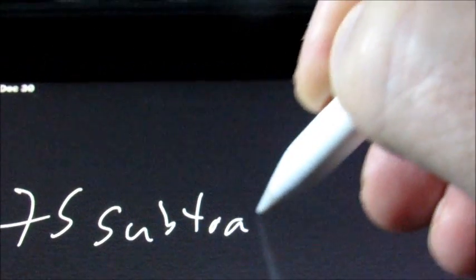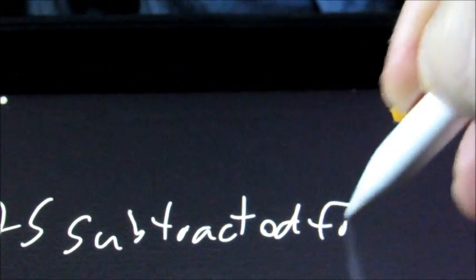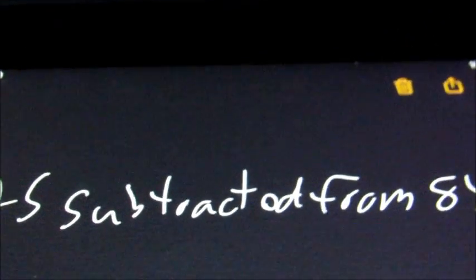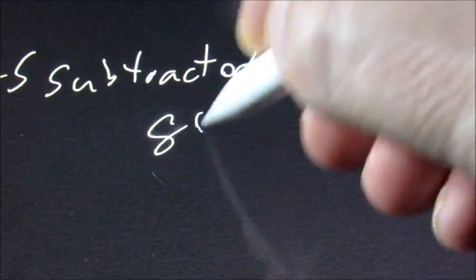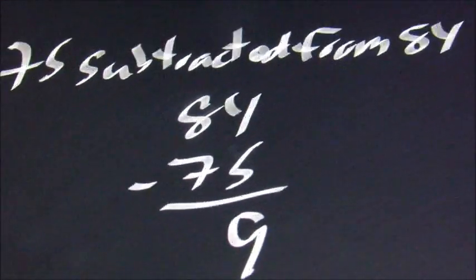Next, it's going to be something like 75 subtracted from 84. Here, we just do it backwards. So it's going to be 84 minus 75, which is 9.